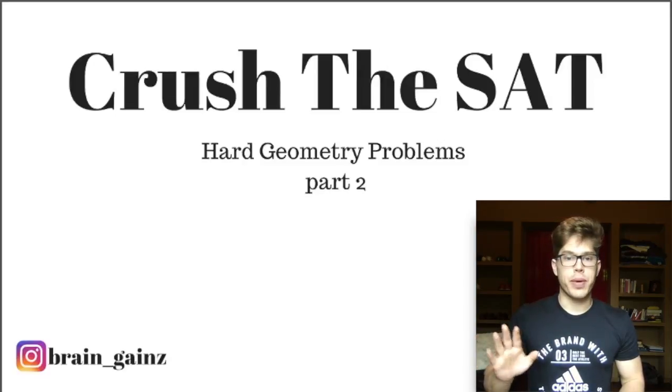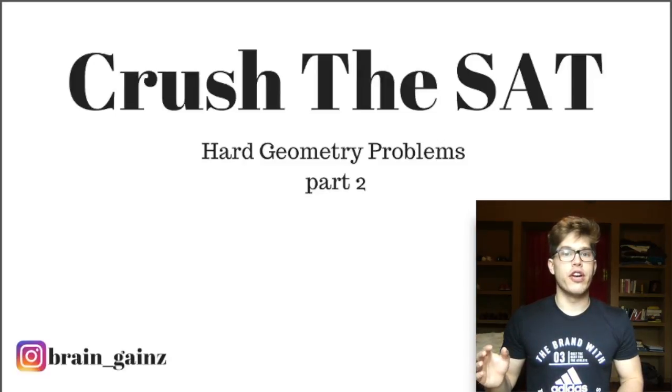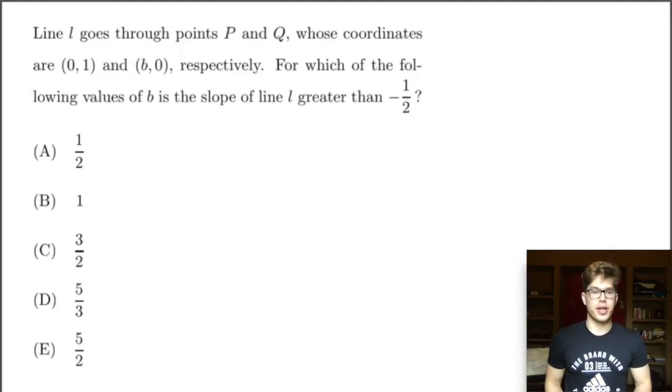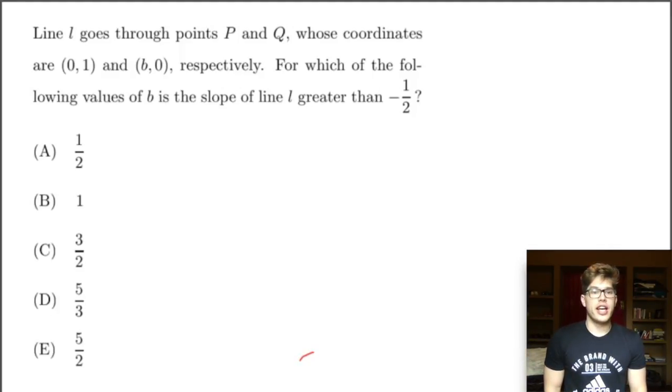As always, feel free to pause the video, solve the problem for yourself before you watch my solution. Let's get going. What's this first problem say? Line L goes through points P and Q whose coordinates are (0,1) and (b,0) respectively. For which of the following values of b is the slope of line L greater than -1/2?